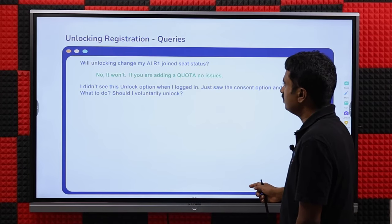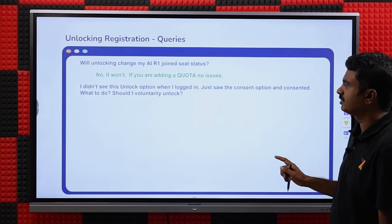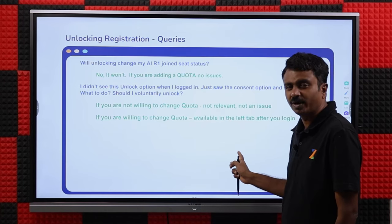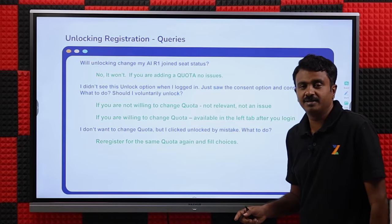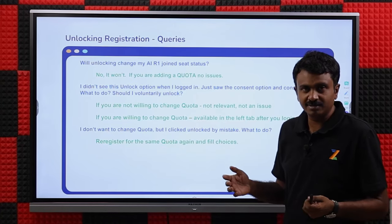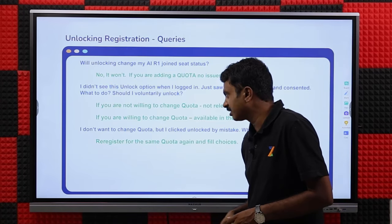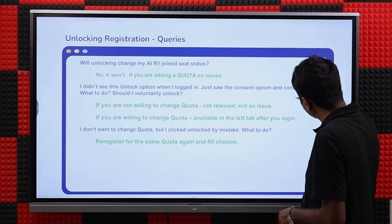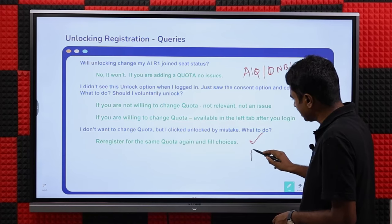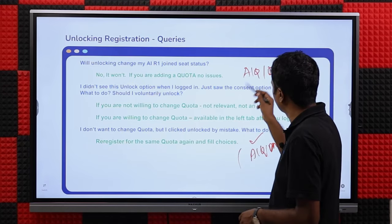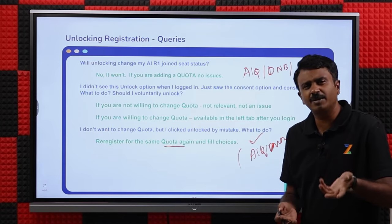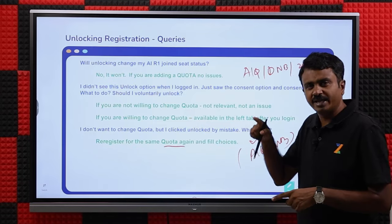If you didn't see the unlock option when you logged in and only saw consent — don't voluntarily unlock. Only unlock if you want to change quota or category. If you unlocked by mistake, don't worry — nothing changes significantly. If you had selected AAQ and DNB and paid 25K, after unlocking just select AAQ and DNB again and pay the 25K again. That earlier 25K will be returned. But once you agree to unlock, you will have to re-register — that is the requirement. No other impact.